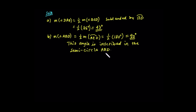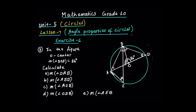And that semicircle is arc ABD. Angle ABD is inscribed in this semicircle ABD, and it's subtended by arc AD. Arc AD is 180 degrees. Therefore, angle ABD is 90 degrees.